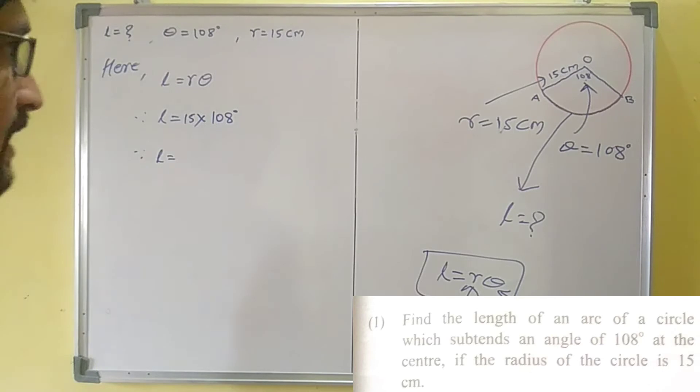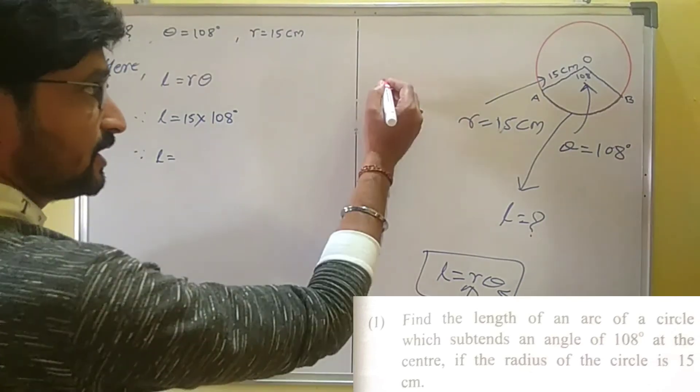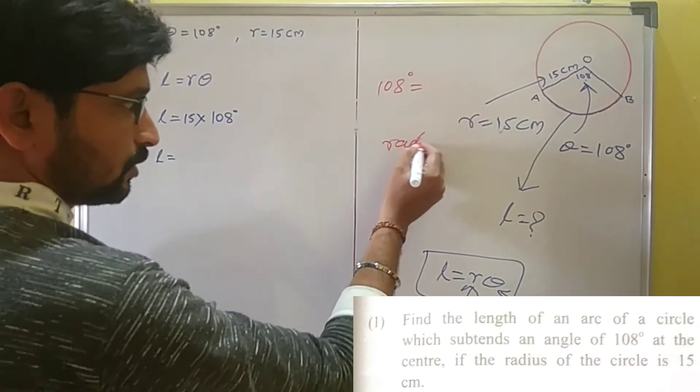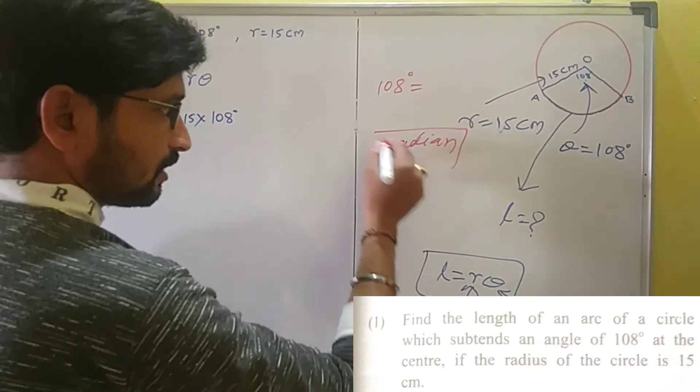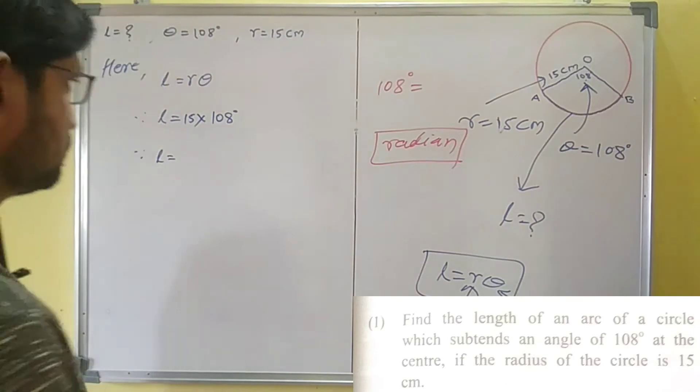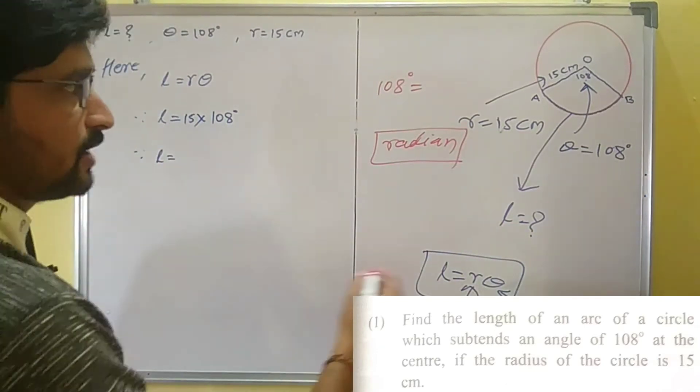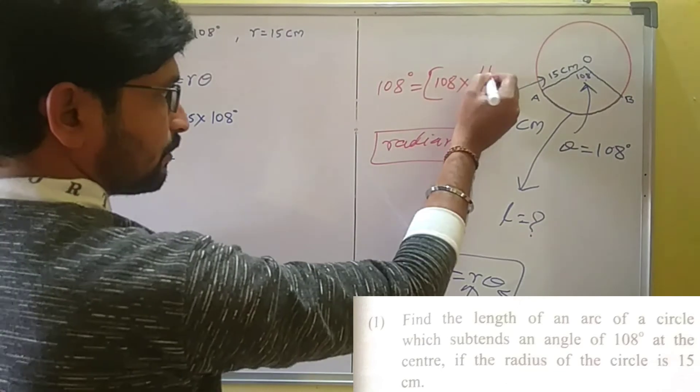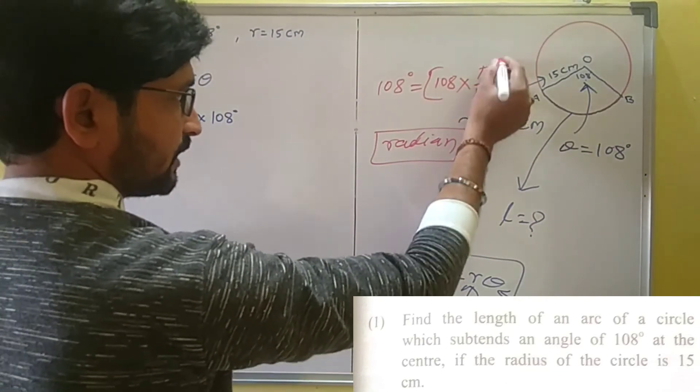Now we need to be careful. In the last chapter, angles were in degree measurement, but in this chapter we need to convert degrees into radians. So to convert degree to radian, we need to multiply by pi by 180 degrees.